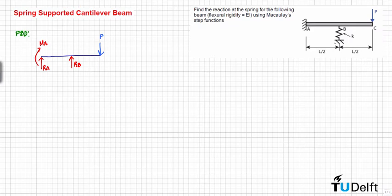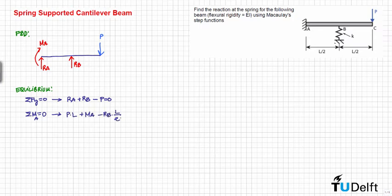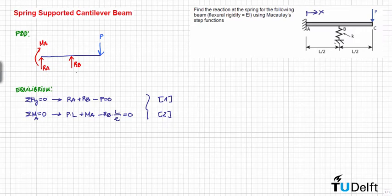We have three unknowns, and from equilibrium we can find the two first equations we need to solve this problem. We know that the sum of forces in the vertical direction is equal to zero, and that the sum of moments is also equal to zero. So we essentially have two equations and three unknowns — Ma, Ra, and Rb — and we need to find one additional equation, one constraint on deformation, in order to solve this problem.